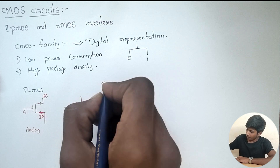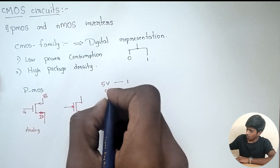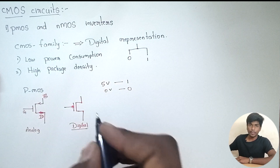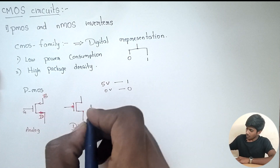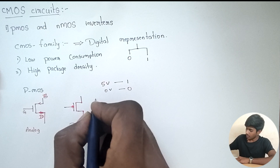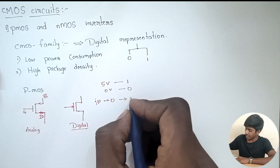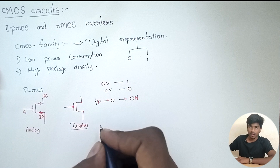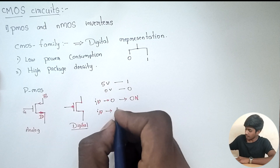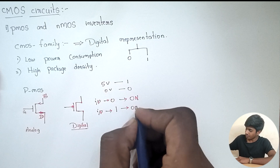For an analog value of 5 volts, we take digital value as 1, and for 0 volts, we take digital value as 0. When we give input as 0, PMOS is in the ON state. When input is 1 — that is high voltage, 5 volts — then PMOS will be in the OFF state.